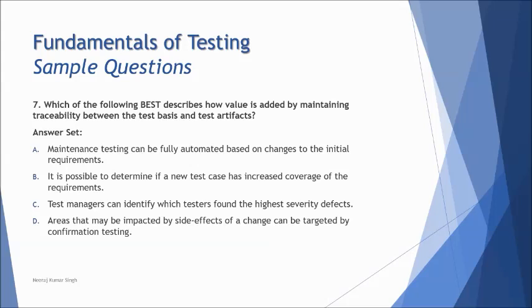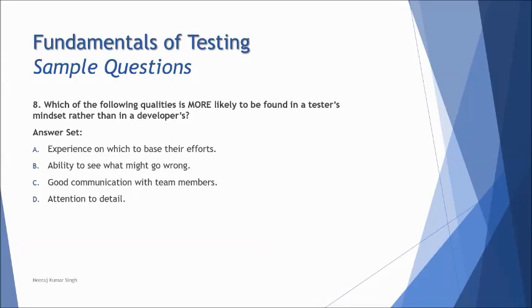Maintenance testing can fully be automated. Automation of maintenance testing does not rely on traceability. It is possible to determine if a new test case has increased coverage of the requirements. Yes, that's good, that could be one of the reasons for that. C: test manager can identify which tester found the highest severity defects, and I think that's a discriminating statement, that you evaluate somebody's qualification or skill set based on the number of defects found, and that's conflicting, contradicting with the laws of testing procedures. The areas that may be impacted by side effects of a change can be targeted by confirmation testing. So D, they start with regression and they end with retesting, and that could not be a good option. So I think the final answer we have got is B, because as you add new test cases, of course it has to help you measure what better coverage has been achieved on the requirements when you add certain new test cases, and that can be achieved by traceability between the basis and the artifact created.